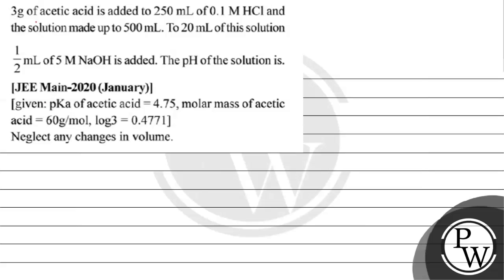Let's read this question. 3 grams of acetic acid is added to 250 ml of 0.1 molar HCl and the solution is made up to 500 ml. 20 ml of this solution, half ml of 5 molar NaOH is added. The pH of the solution is to be found. pKa of acetic acid is given as 4.75, mass of acetic acid is 60 gram per mole, and log 3 is given as 0.4771.